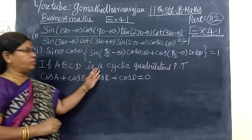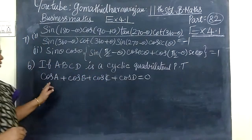In problem 6.1, if ABCD is a cyclic quadrilateral, prove that cos A + cos B + cos C + cos D = 0.